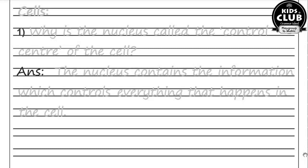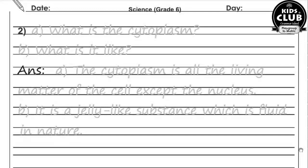Cells — Question number one: Why is the nucleus called the control center of the cell? Nucleus ko control center of the cell kyun kaha jata hai? The nucleus contains the information which controls everything that happens in the cell. Nucleus control karta hai.